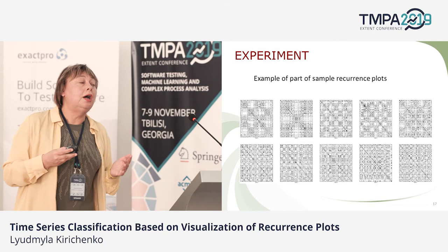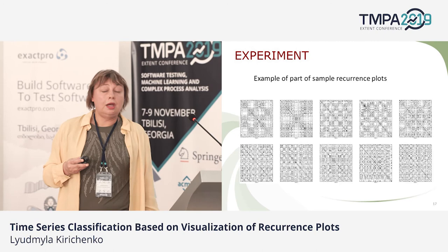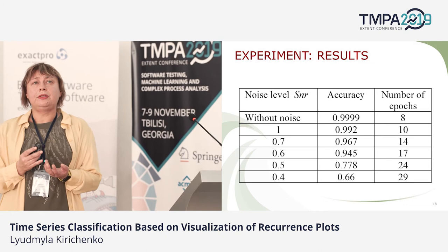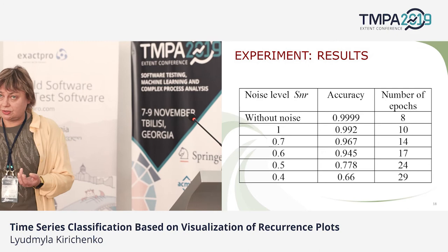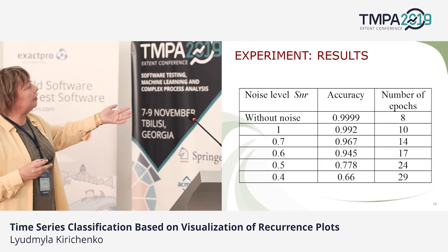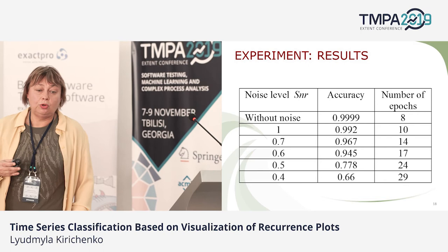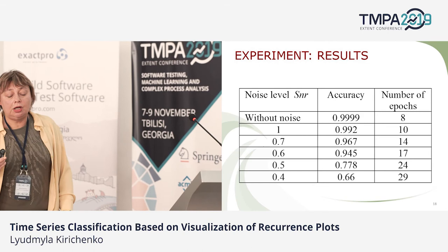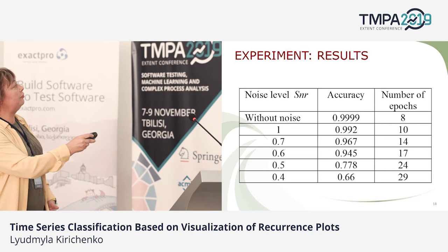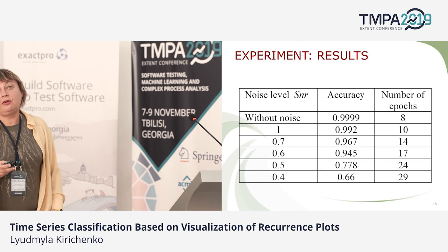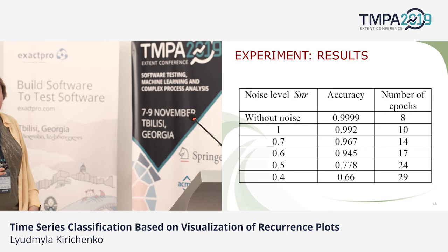The convolutional network has to recognize the first and second class, and you can see we have a good result. We considered different frequencies and different levels of noise. If we have a realization without noise, accuracy is very high — almost 1. Before the noise level exceeds one half, we have a very good result for recognition. When we have a big level of noise, we can still classify correctly.